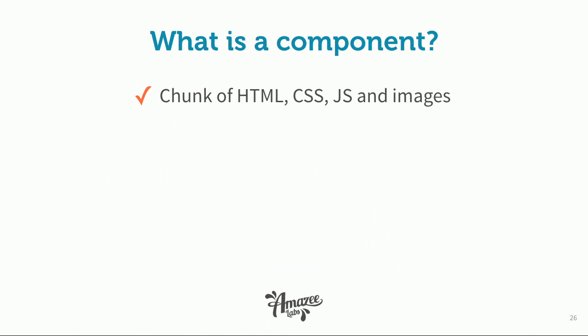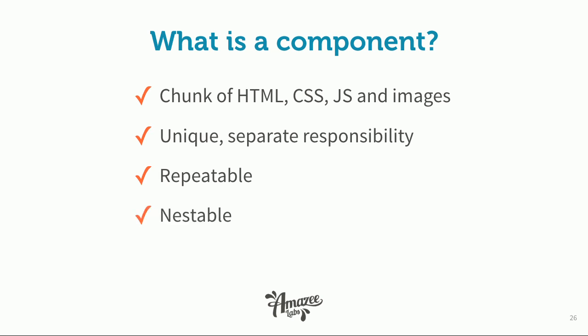So what is a component? A single component is a chunk of HTML, CSS, JavaScript, and maybe some images — basically any assets that can be added to a web page and encapsulated inside a component. It has a unique and separate responsibility. It's repeatable, it's nestable, and it can have design variations. For example, if you have a red button and also want a gray button, they wouldn't be separate components — it would be one component with a way to specify: show me the primary button design (red) or the secondary button design (gray). Each component has specific purposes but can have different variations.